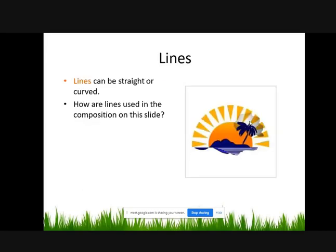Line: a line can be straight or curved. In this diagram, we can see a curved line on the surface of the sun.